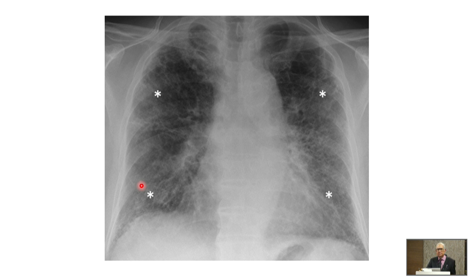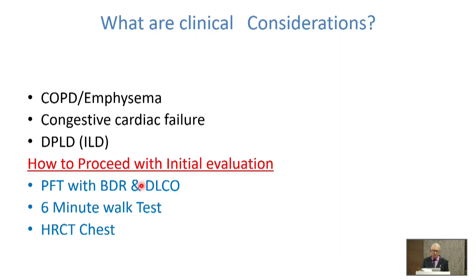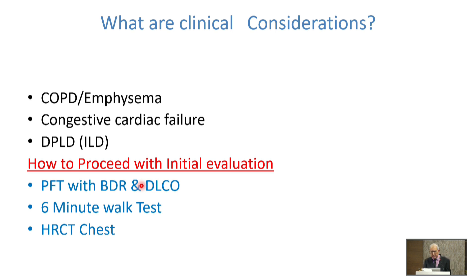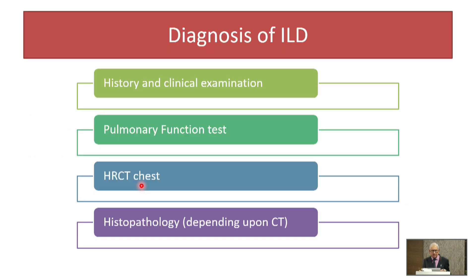When the X-ray was done, there was hyperinflation, and an experienced person could make out some reticulations. This was a time when CT scans were not yet available. The differential considerations were COPD, congestive cardiac failure, or ILD. The question was how to proceed — whether PFT with bronchodilator response and diffusion capacity, or a six-minute walk test.